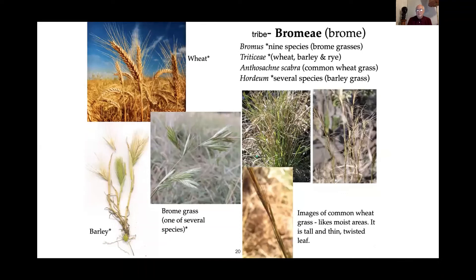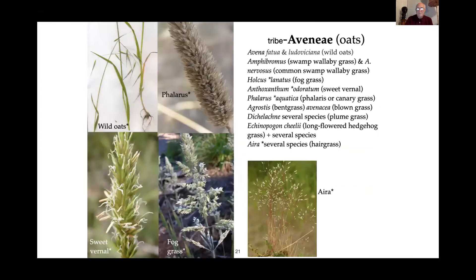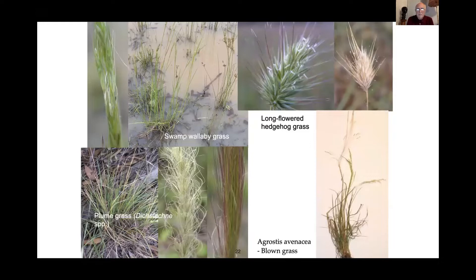Then you've got the brome family. People are familiar with wheat, brome grass, and barley. The native grass I'm familiar with in that group is common wheat grass, shown on the right. Then the oats family — a lot of non-native grasses, and then some native grasses too. One I really like is swamp wallaby grass because you find it growing in water — it's more of a grass to observe rather than for any serious purpose.